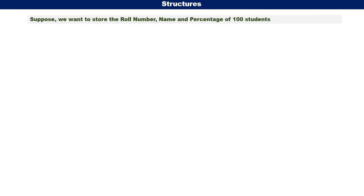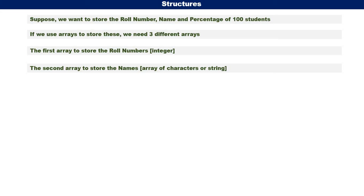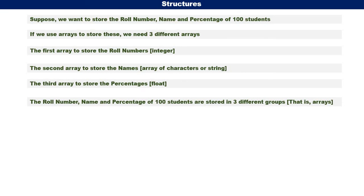Suppose we want to store the roll number, name, and percentage of 100 students. Roll number is of the type integer, name is an array of characters or string, and percentage is of the type float. All three belong to different data types. If we use arrays to store these, we need three different arrays: one for the 100 roll numbers (integer), another for 100 names (string), and yet another for 100 percentages (float). It is almost like three different groups, if each array is considered as a group.